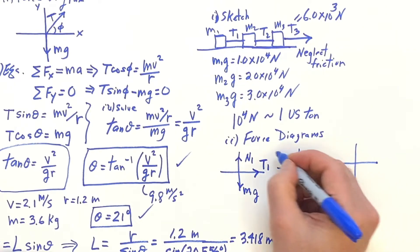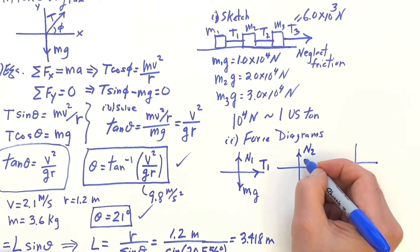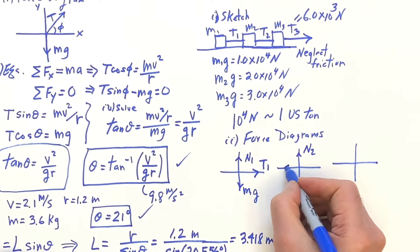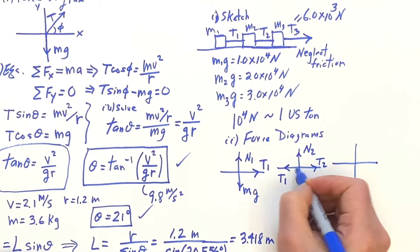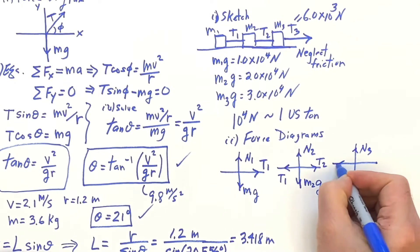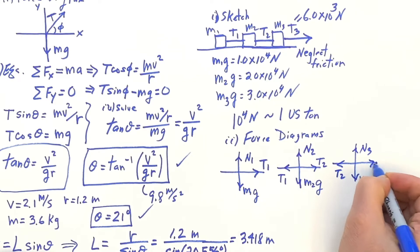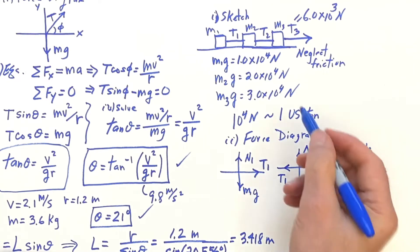Then here is N2 going up, M2G going down. And here, the equal and opposite, we have T1 pulling back and T2 forward. And the third one, N3, M3G, we have T2 pulling back and T3 pulling forward.